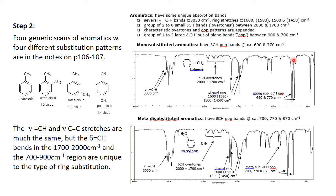The C–H out-of-plane bends in the 700 to 900 region — sometimes called 'oop bends' — for a mono-substituted aromatic appear at about 690 and 770 wave numbers. The meta-disubstituted aromatic has three bands at about 700, 770, and 870 wave numbers. Honestly, the overtone patterns can be difficult to definitively identify the substitution pattern, but they do confirm it is an aromatic.